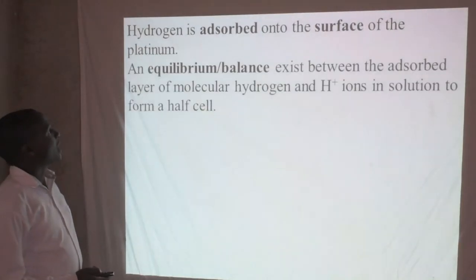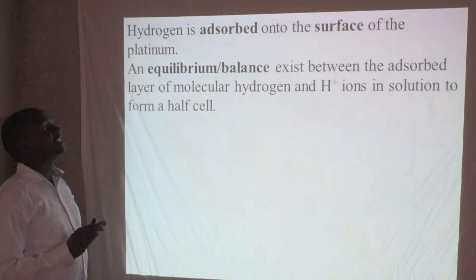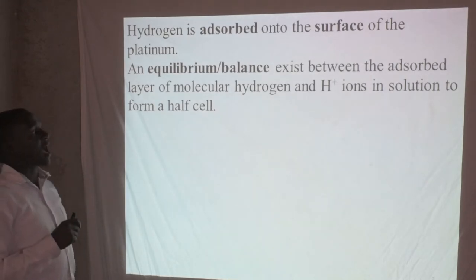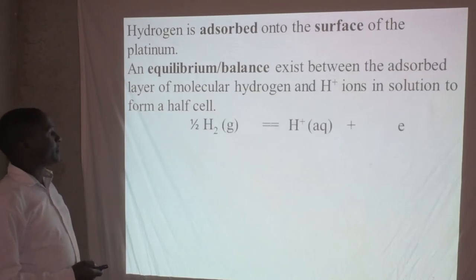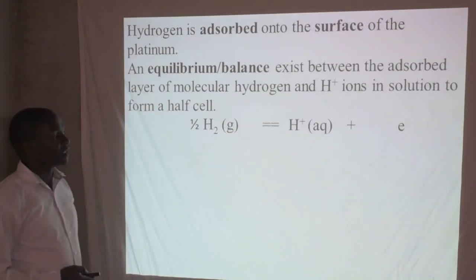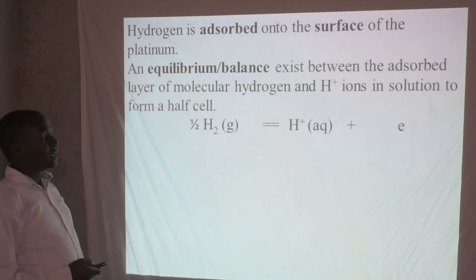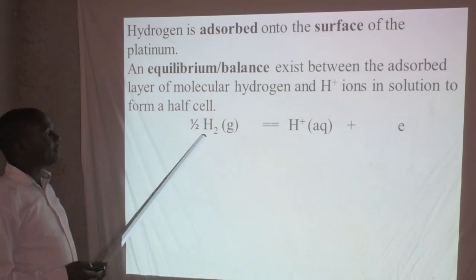An equilibrium exists between the absorbed layer of molecular hydrogen and the hydrogen ions in solution, to form a half cell. So the equilibrium is: half a mole of hydrogen gas gives one hydrogen ion plus one electron. This is an equilibrium whereby the forward and backward reactions take place at the same time, establishing an equilibrium between the hydrogen gas and the hydrogen ions.